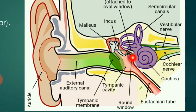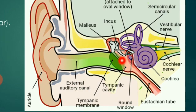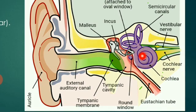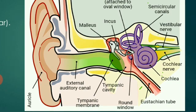The entire vestibular apparatus is responsible for both dynamic and static equilibrium, including the sense of rotational acceleration, horizontal acceleration, vertical acceleration, and general balance. The cochlea is the main part of the ear responsible for hearing, and within it there is the organ of Corti, due to which actual hearing occurs. The cochlea has a characteristic coiling structure.